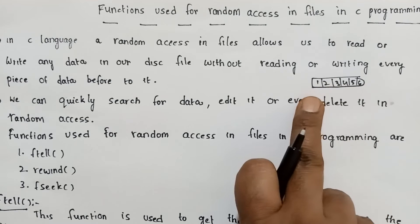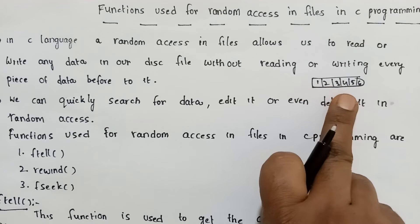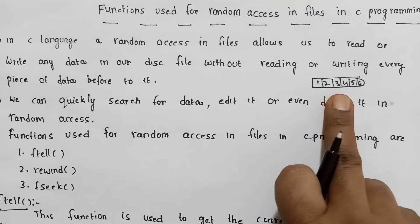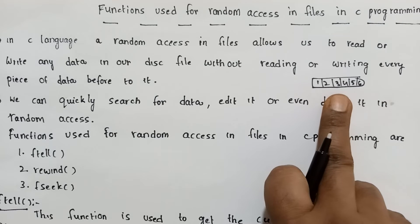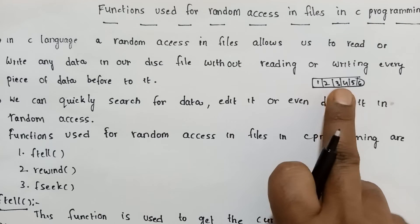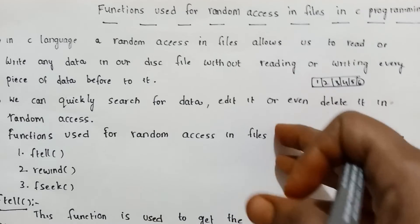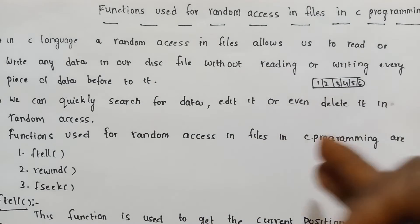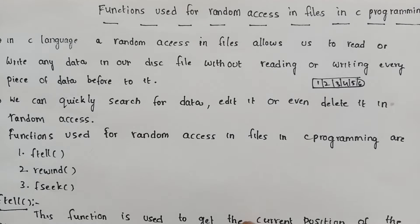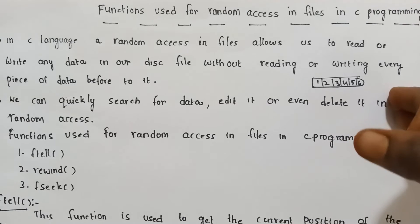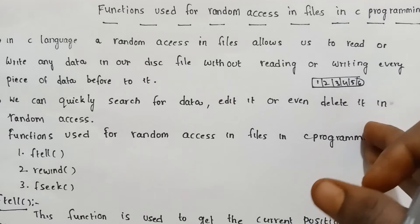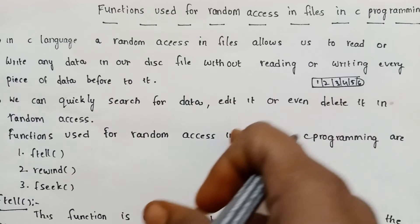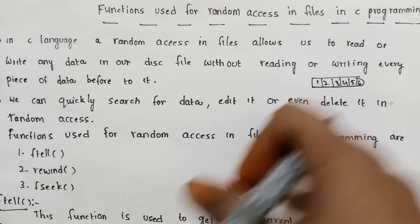In sequential access, there are multiple elements, and you process them all from the start. This takes more time for processing the data, whereas random access provides quicker access, which is why it is called quick access compared to sequential access.